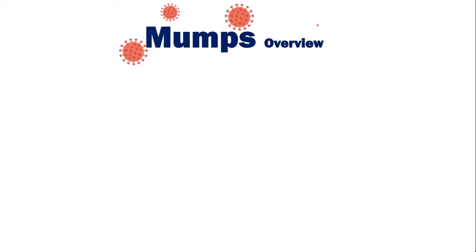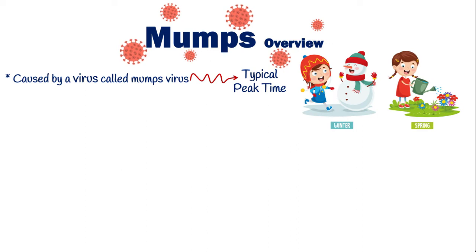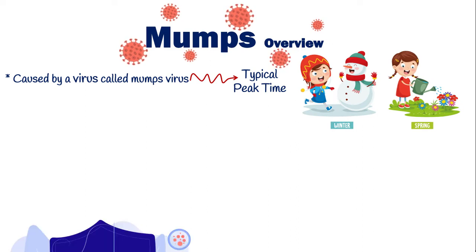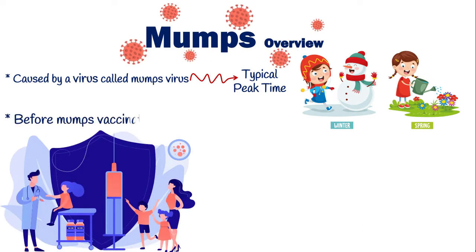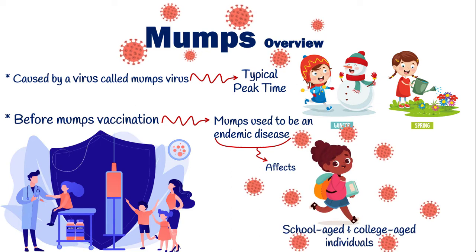Mumps occurs worldwide. It is caused by a virus called mumps virus which typically tends to peak in late winter to early spring. Before the implementation of routine vaccination programs, mumps historically has been a highly prevalent endemic disease, which most commonly affected school age and college age individuals.